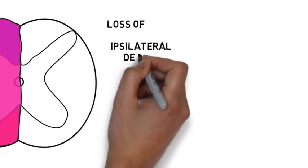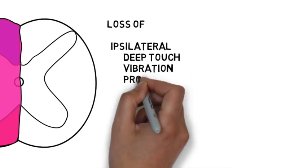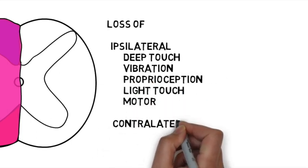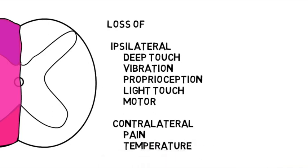In doing so, you get loss of ipsilateral deep touch, vibration, proprioception, light touch, and motor, and contralateral pain and temperature, two levels below.